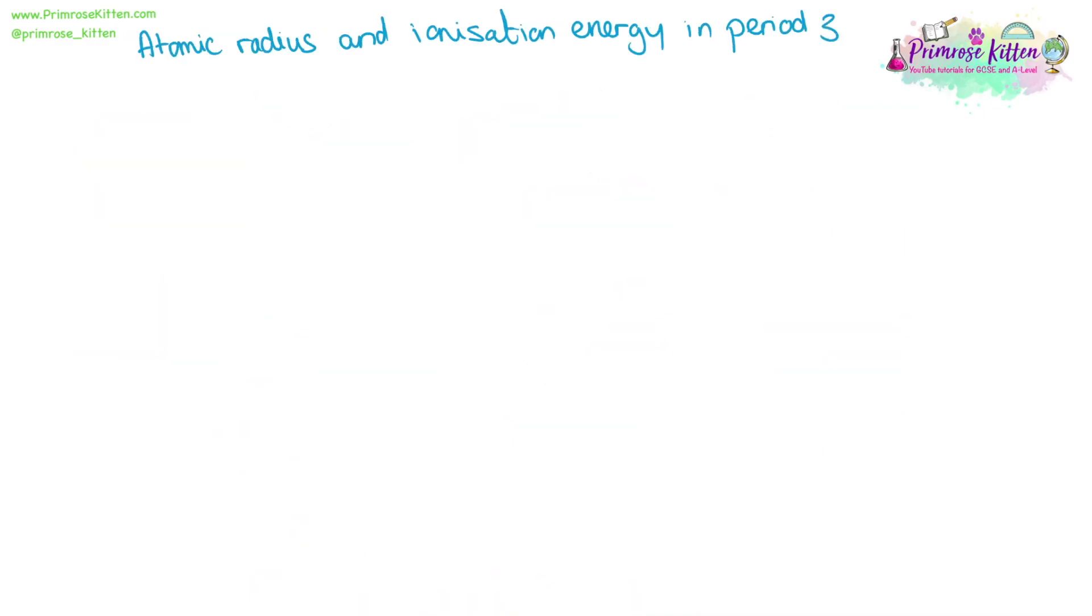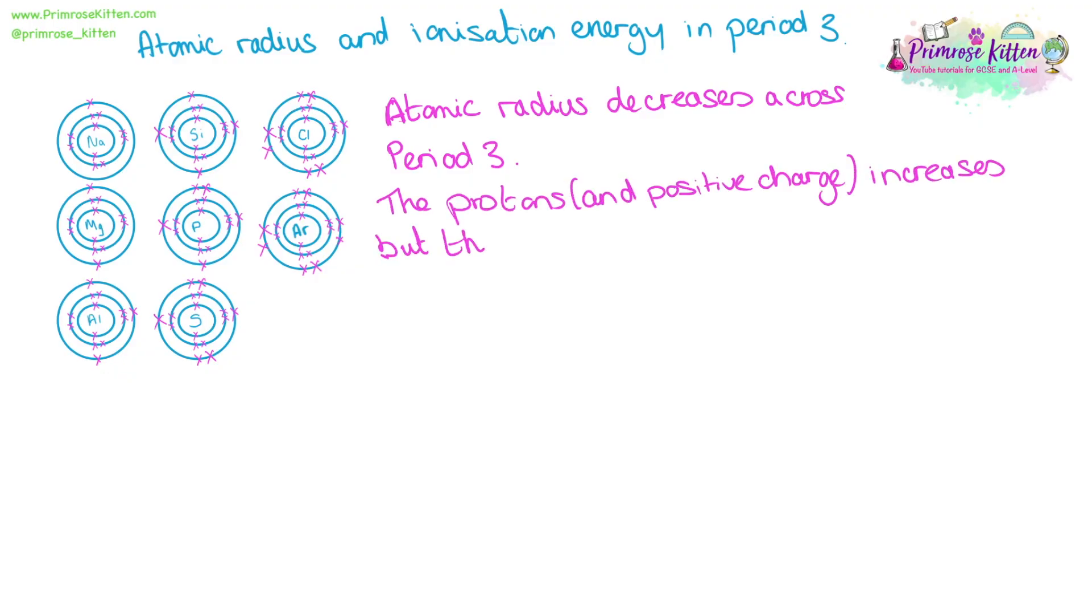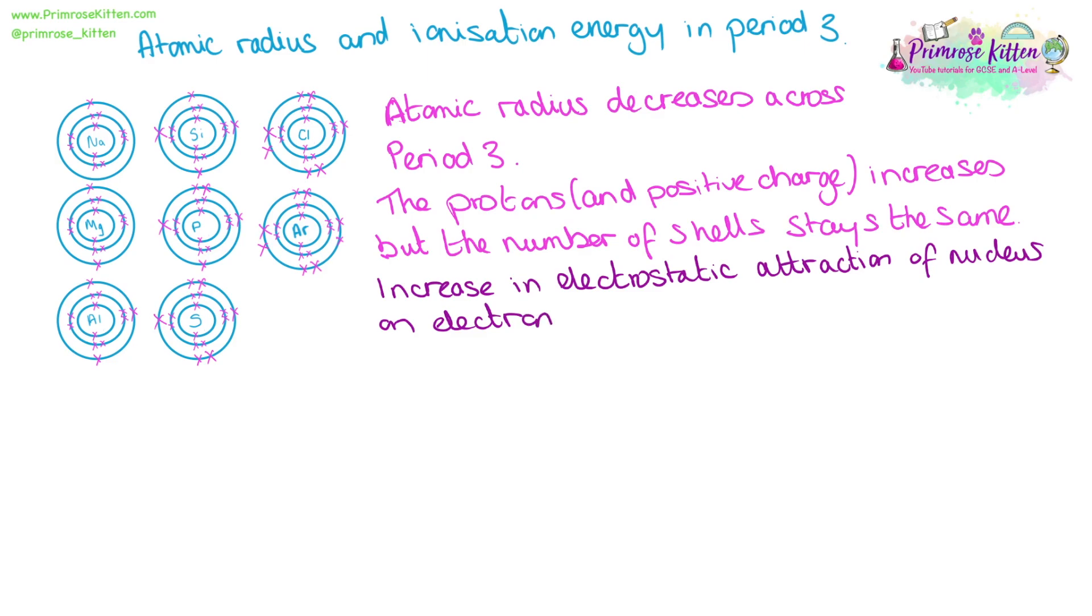When we look at atomic radius and ionization energy in period three, we see some really interesting things. The atomic radius decreases across period three. As the protons and thus the positive charge increases, but the number of shells stays the same, there is an increase in the electrostatic attraction of the nucleus on the electrons, pulling them in and decreasing the atomic radius.